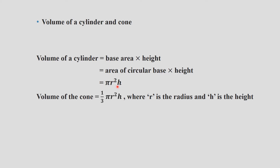Therefore, volume of a cylinder is equal to pi r square h. For finding the volume of a cone, we can find a relation between the volume of the cone and the cylinder. Take a hollow cylinder and a hollow cone with the same radius and the same height. Fill the cone up to the brim with sand and empty it into the cylinder. The cylinder is not full. Repeat the same process — when the cone is filled three times, the cylinder is full. So volume of a cylinder equals three times the volume of a cone, or volume of a cone is one-third pi r square h, where h is the height and r is the radius.